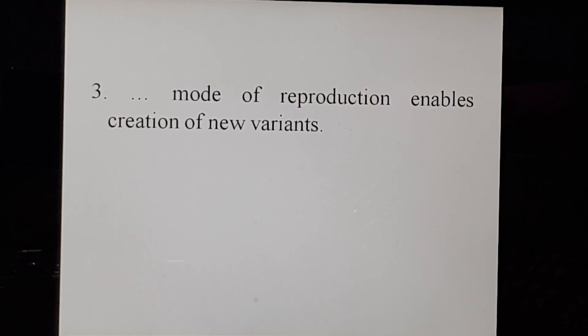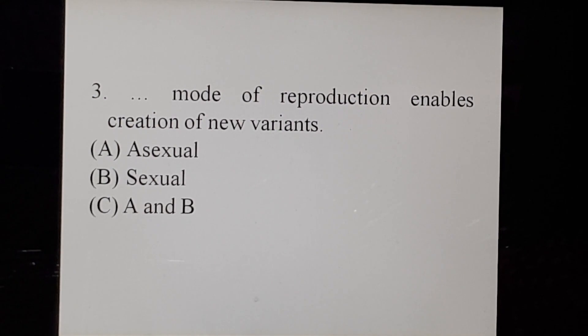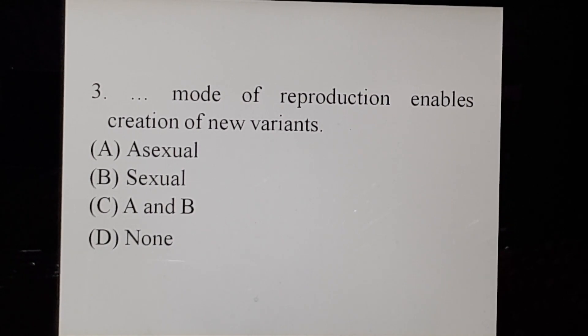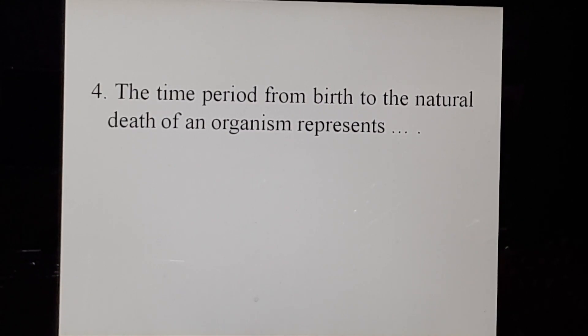Question 2: Sexual mode of reproduction enables creation of new dash. A: variants, B: a and c, C: mutants, D: none. Correct answer is Option A - variants. Question 3: Which mode of reproduction enables creation of new variants? A: asexual, B: sexual, C: a and b, D: none. Correct answer is Option B - sexual.